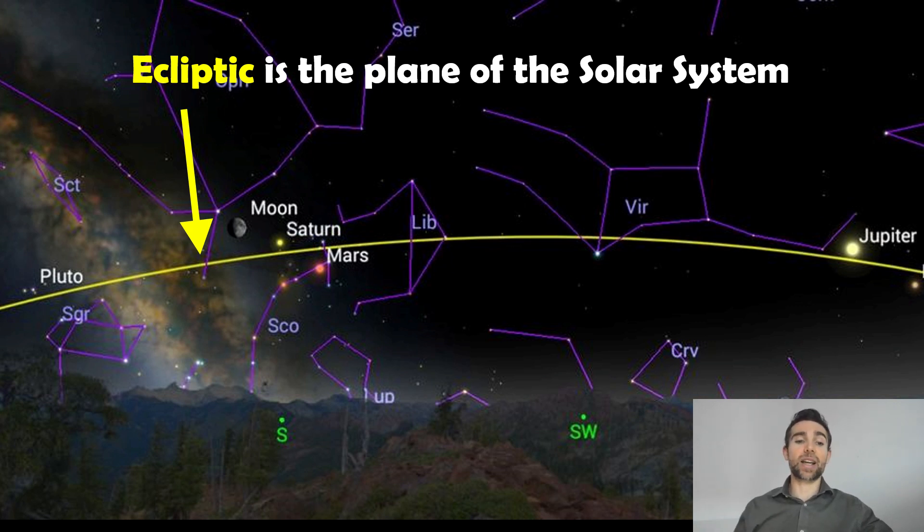So if we mark out the ecliptic in the night sky with regards to the constellations and stars, you'll most likely find your planets somewhere along that line.